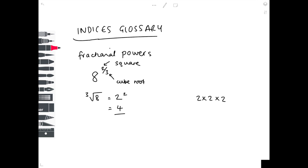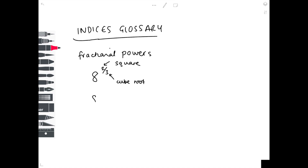Just to show we could have done it the other way around — it doesn't matter what order we do it. Let's square first: 8 squared is 8×8=64. Now we cube root 64: 4×4=16, ×4=64, so the cube root of 64 is 4. The answer is again 4, confirming order doesn't matter.